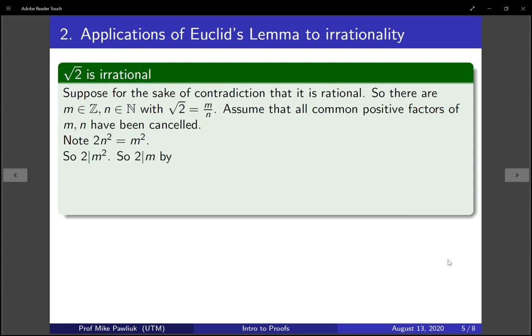Now what do we know about m squared? Well, 2 divides m squared, or in other words, m squared is even. So why does that tell us that m has to be even? Well, this is Euclid's Lemma. 2 is a prime, and 2 divides m times m, so it has to divide m.